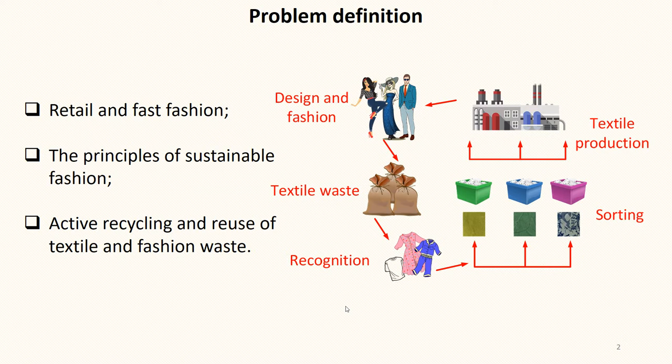The growth of retail trade and fast fashion leads to a constant increase in the amount of waste from textiles. One solution to this problem is to use the principles of sustainable fashion. These principles are used at all stages of the product life cycle, from the delivery of materials and the production of textiles to its reaching the end user. Also, the recycling and reuse of textiles. The active recycling and reuse of textile and fashion waste allows both designers and consumers to use waste as a resource.